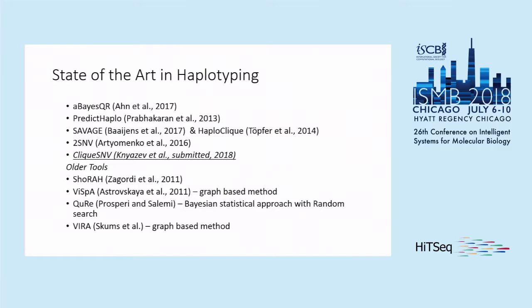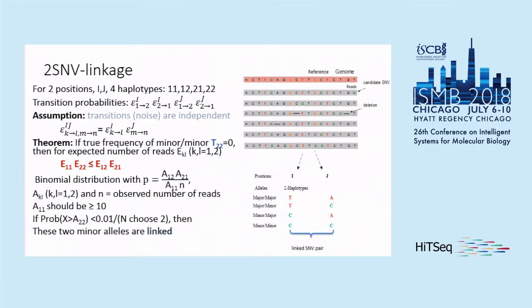There are many tools for this problem. Pioneering work includes tools like by Zagordi et al. from the Beerenwinkel group — that's ShoRAH — and VSPA at the same time, and some others. Recently, many tools have appeared: Savage was presented last year, HaploClique a bit earlier, 2SNV we had in 2016, and at RECOMB PredictHaplo was presented. Our tool is Click SNV, which is a generalization of 2SNV. 2SNV was only applicable to PacBio reads, while Click SNV is also applicable to MiSeq and other short reads.